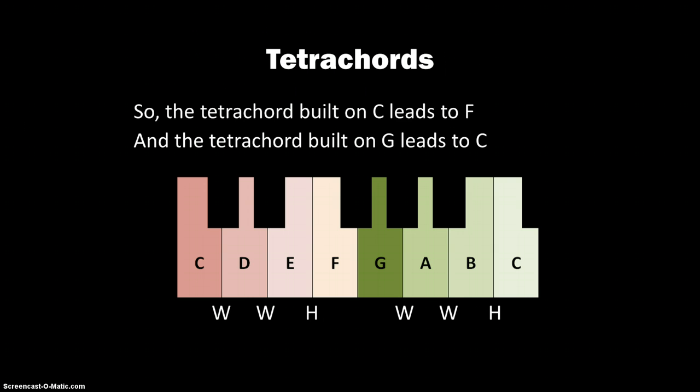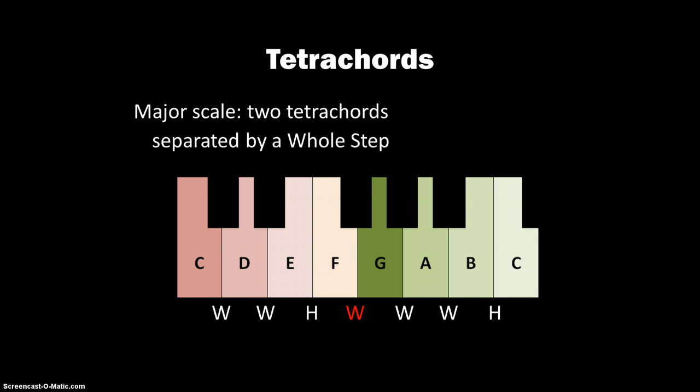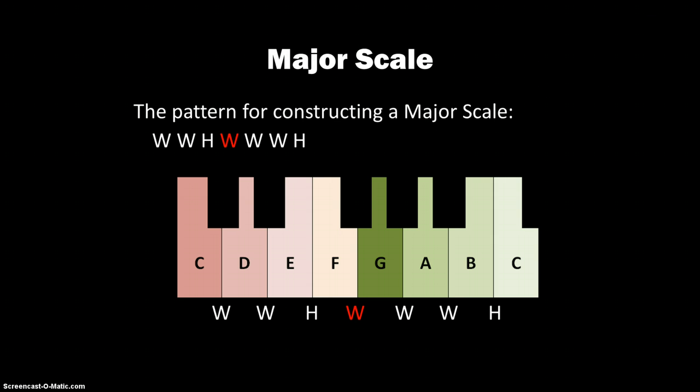To make a major scale, all we're going to do is say that those two tetrachords are separated by a whole step. So the final pattern for a major scale would be whole, whole, half, whole, whole, whole, half, or tetrachord, whole step, another tetrachord. So that gives us our full C major scale.